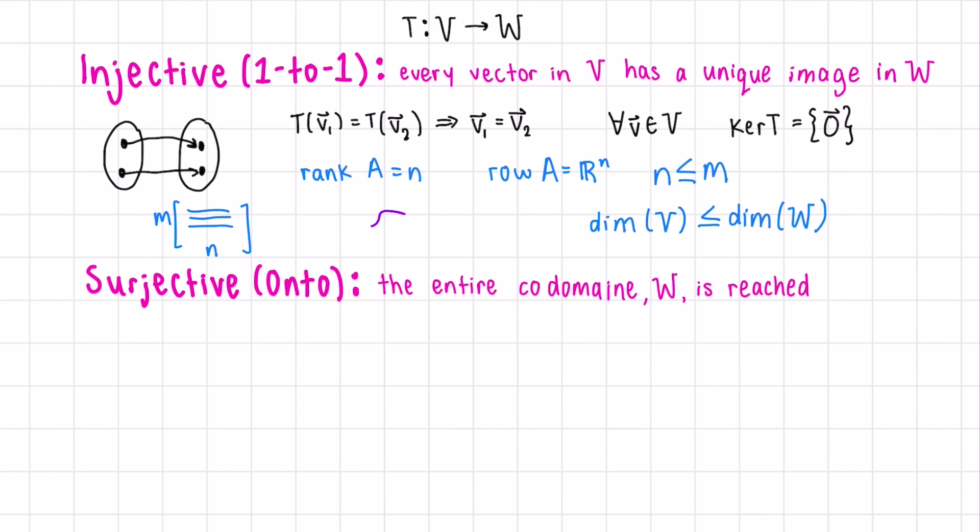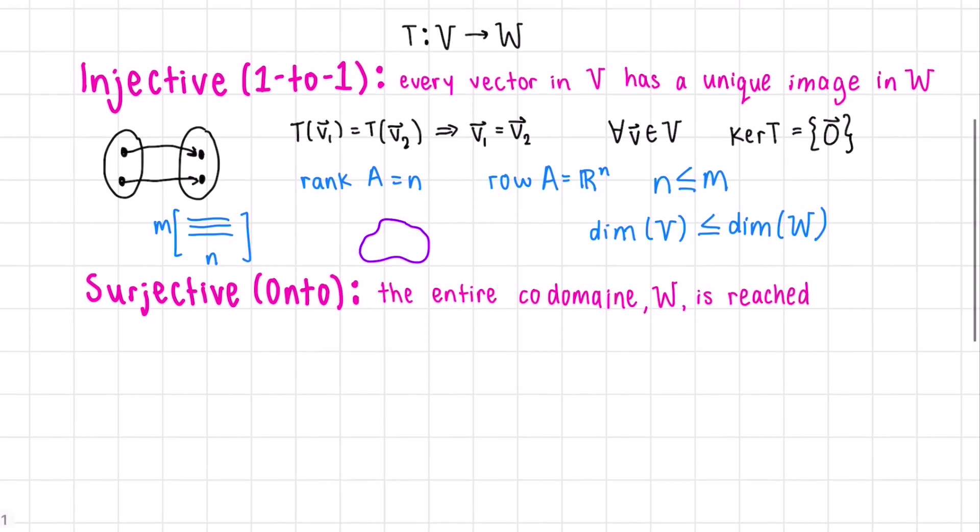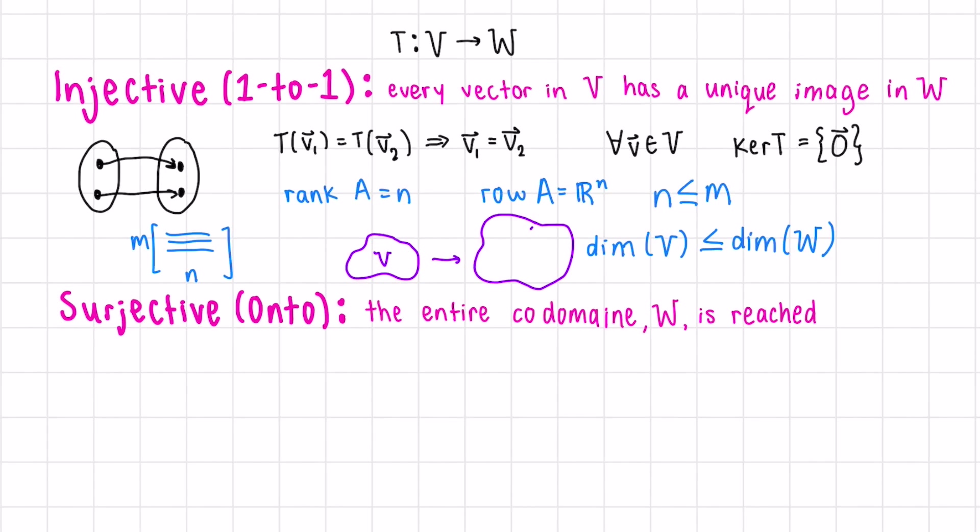Visually, this would look like the spaces are either the exact same, or it could be the case where V is smaller than W, so we're going from a small space to a big space.